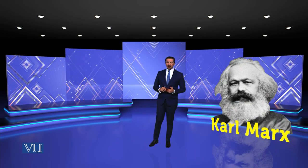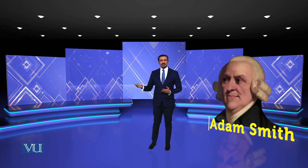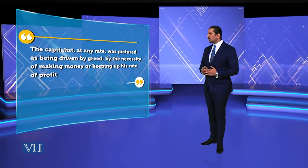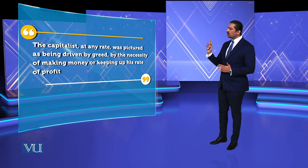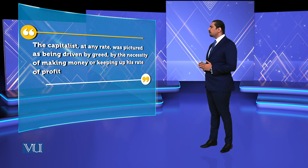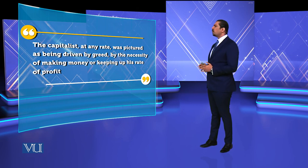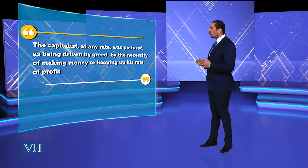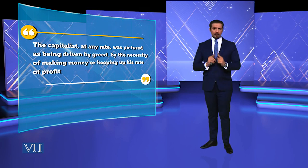Karl Marx bhi bahut ghalat interpret hue hain — even Adam Smith ke capitalism ko fascist capitalism ki taraf le kar gaye, woh bhi ghalat interpret hue hain. Correct interpretation aaj bhi zaroori hai — capitalism, phir communism, phir socialism — in ko behtar karne ki zaroorat hai. Lekin yeh profit motive, rather the capitalists, were pictured as being driven by greed, by the necessity of making money or keeping up the rate of profit — yeh bada important hai.